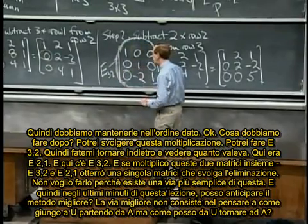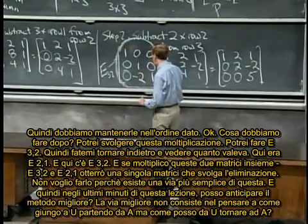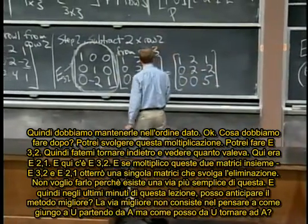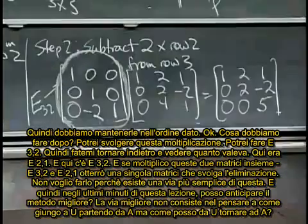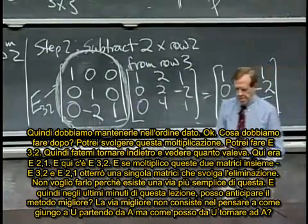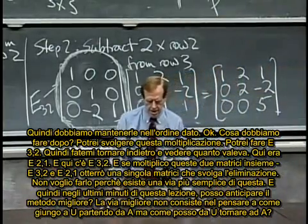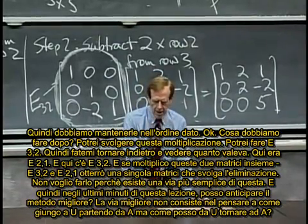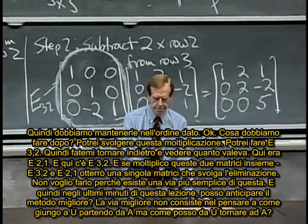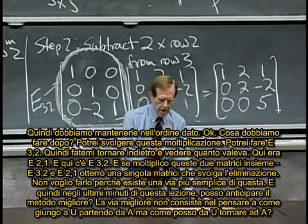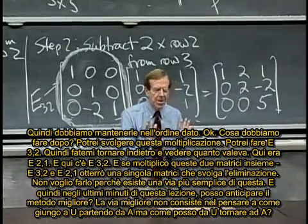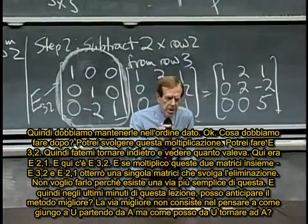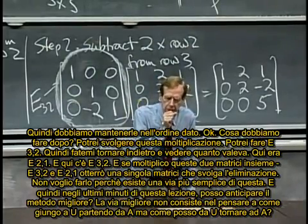And here is E three two. And if I multiply those matrices together, E three two and then E two one, I'll get a single matrix that does elimination. I don't want to do it that way. I don't. If I do that multiplication, there's a better way to do this. And so in this last few minutes of today's lecture can I anticipate that better way.